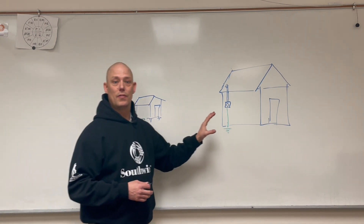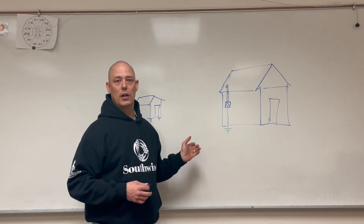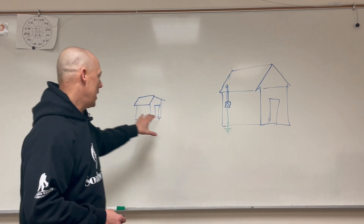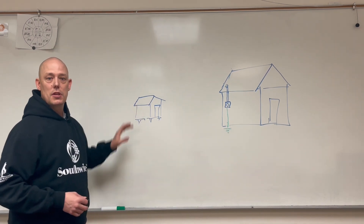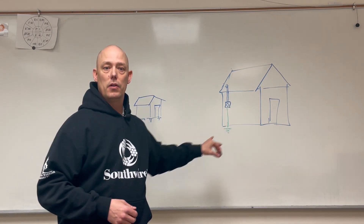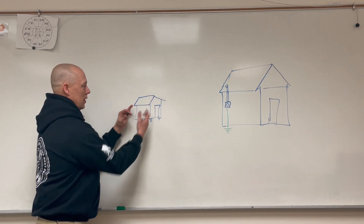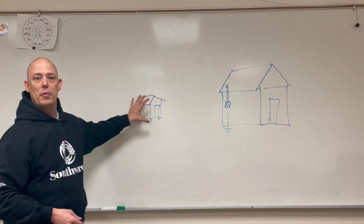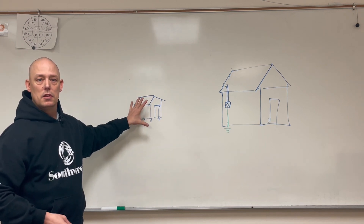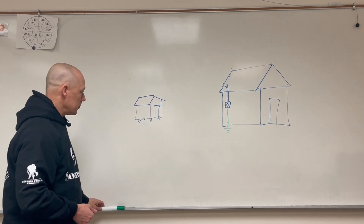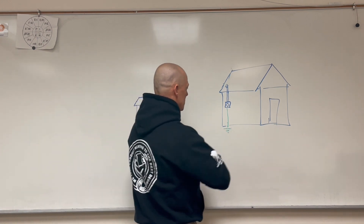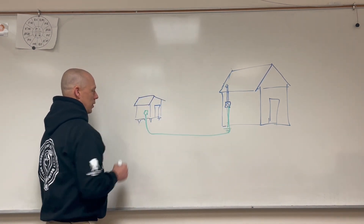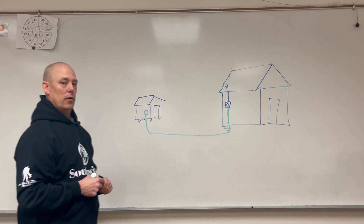That would violate 225.30, which tells me I can only have one. So then we know we would have to put a subpanel out here. If we put a subpanel out here, that's one feeder, and from that subpanel I could put multiple branch circuits or pieces of equipment in this building. I'm going to take a feeder underground and put a panel out there.